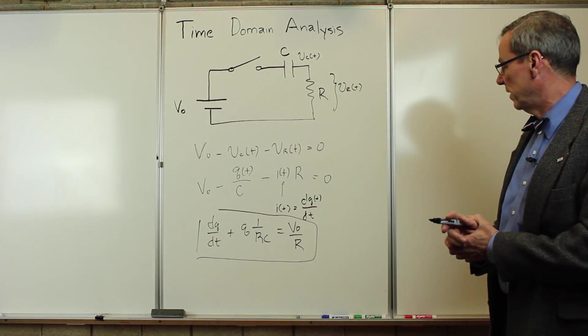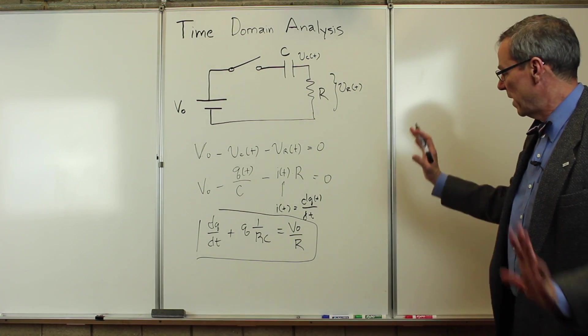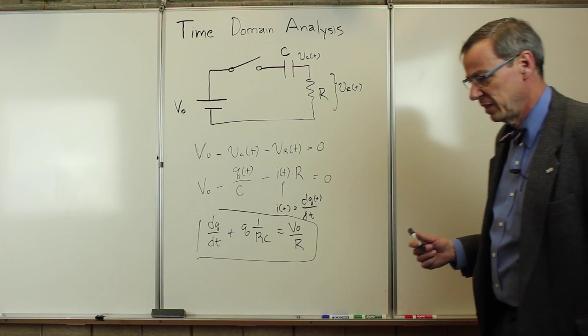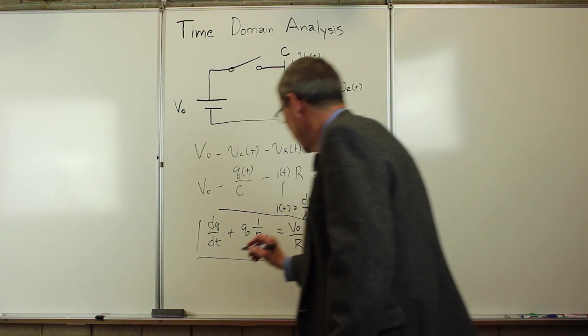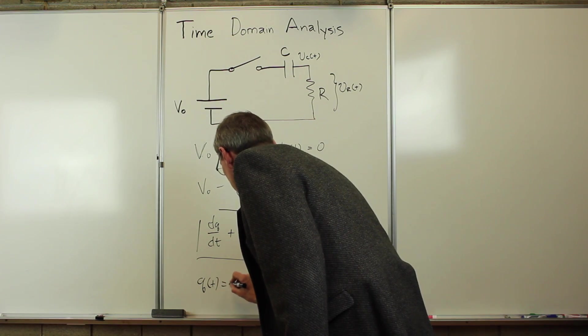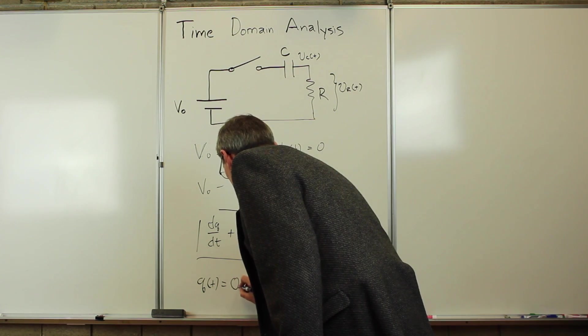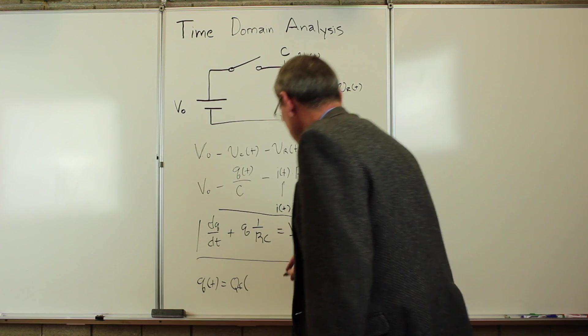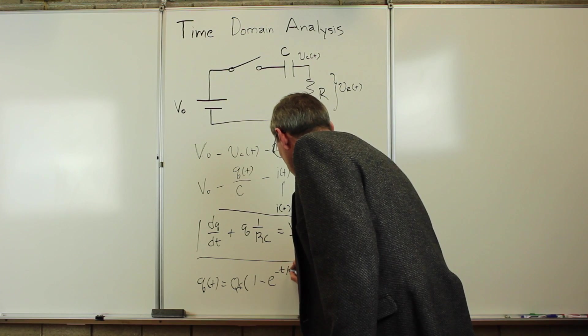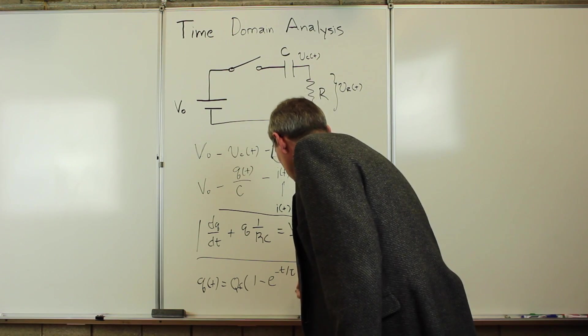And I'm interested in solving that for the charge as a function of time. Now, there are methods to solve that. My favorite one is simply to guess the solution. And I'm just going to write down a guess here. I'm going to assume, guess that Q of t is some final charge on the capacitor, Q_final times 1 minus e to the minus t over some characteristic time tau.